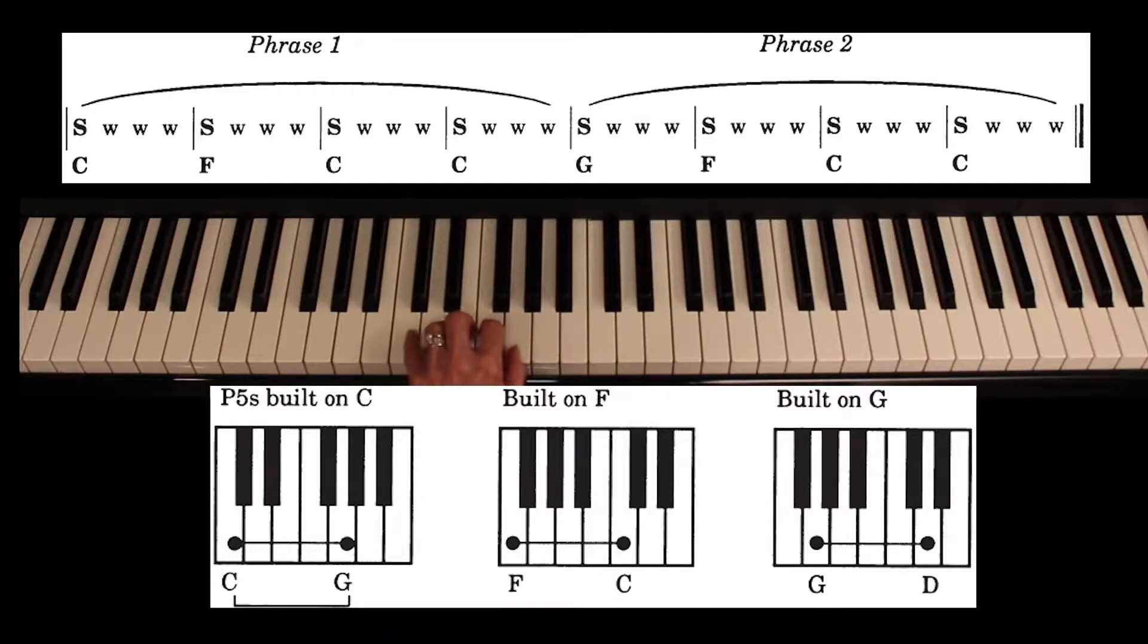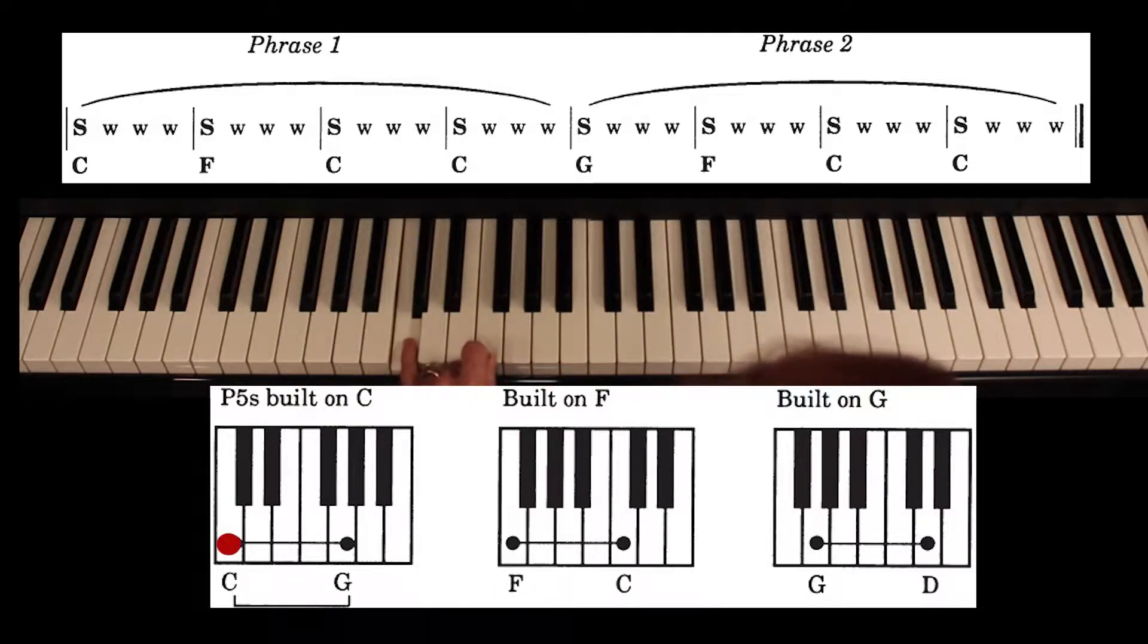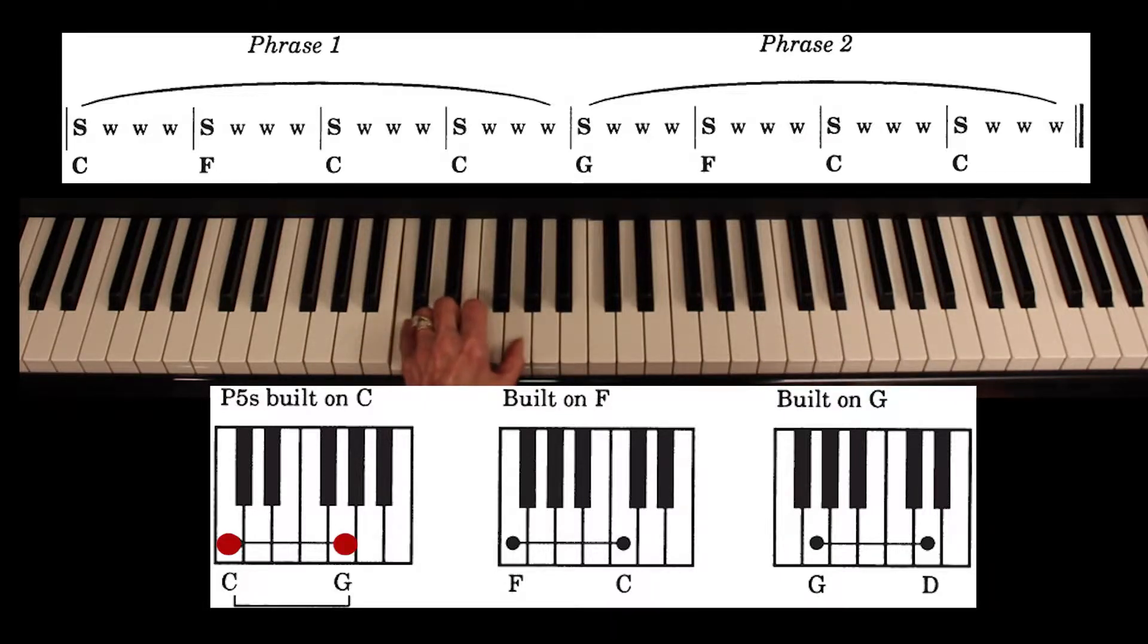First, let's locate the piano keys that we need for our blues bass. Two black keys to the left is C. Put your left hand pinky on a C. Now this interval, a perfect fifth, twinkle twinkle. Put your thumb on this G.